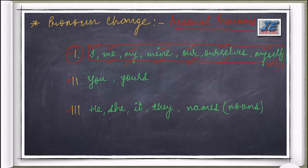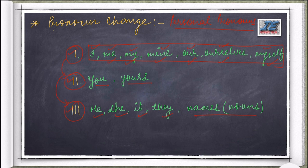You and things related to you are given second place, so that is the second person pronoun. He, she, it, they, and other names are at third place in my life, so they are the third person pronouns. This way you can relate what first, second, and third person pronouns are.